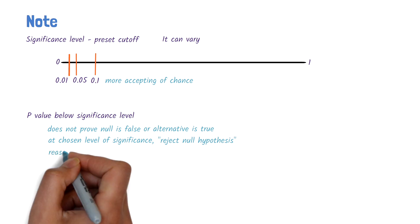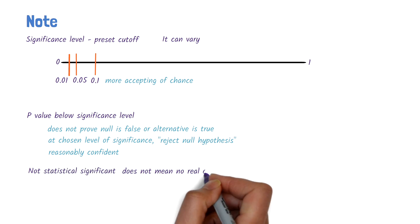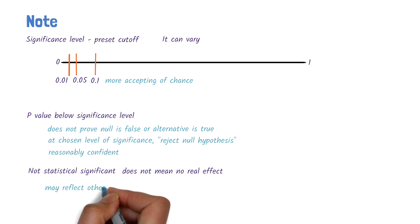A result that is not statistically significant does not necessarily mean there is no real effect. It could reflect issues such as a small sample size, large variability, or limitations in the study design.